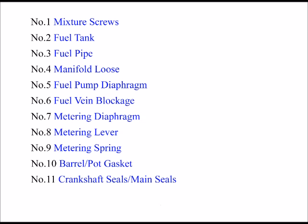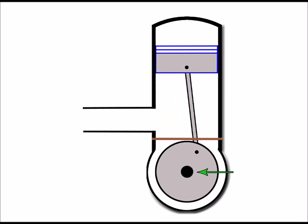That brings me on nicely to my number 11, which is the crankshaft seals or the main seals as they're well known. The main seals are here where the crankshaft sticks out of the crankcase. To better explain this point I'll need a view from this angle, so I'll turn this engine round so we can see this face.